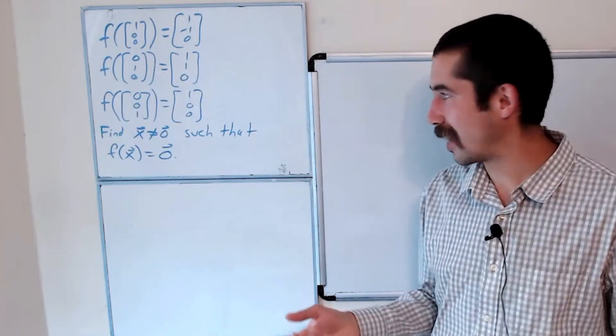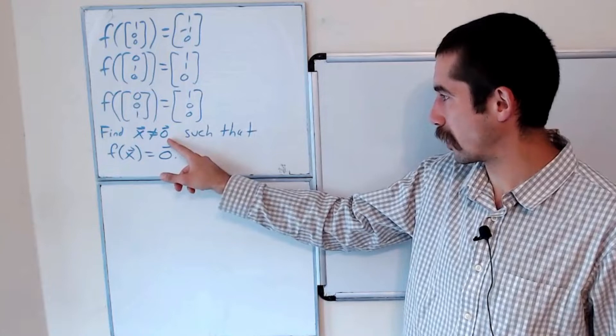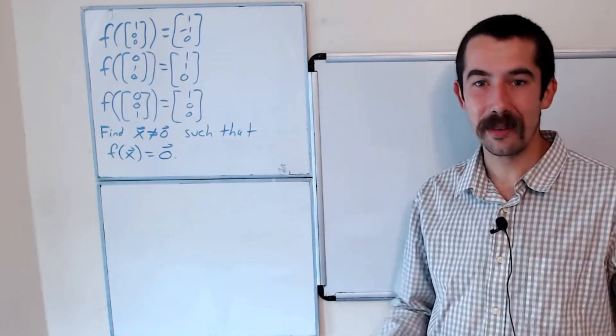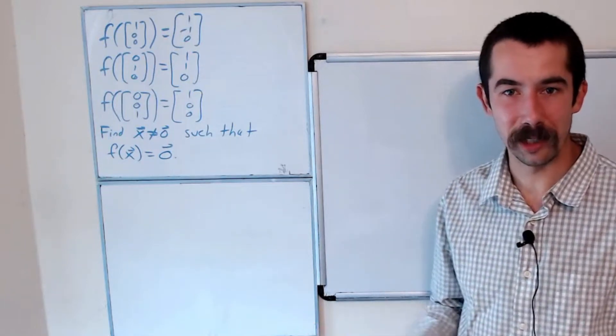And the question asks: find a non-zero vector such that f(x) equals 0. And I gave a hint, find the matrix for the linear transformation.